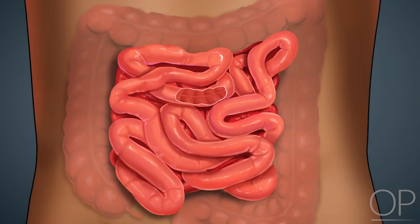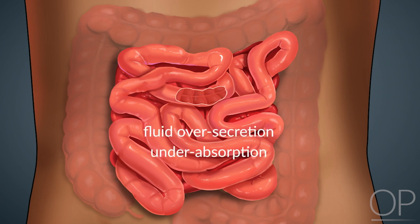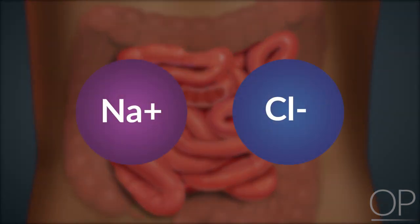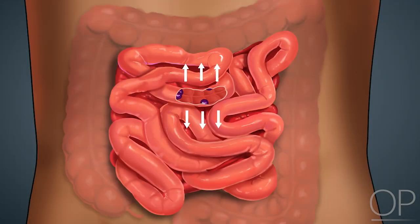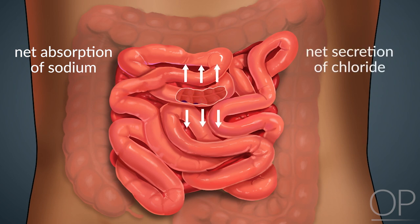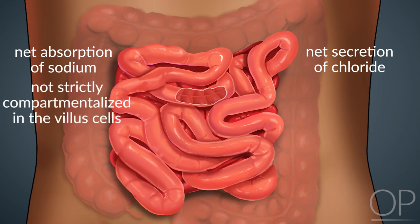Pathophysiology. Diarrhea occurs when excessive fluid remains within the lumen of the intestine. As such, diarrhea can be caused by fluid over-secretion, under-absorption, or rapid transport that effectively bypasses this process. As water moves passively across the intestinal epithelium, its relative volume in the lumen is determined by osmotic gradients. The transport of sodium and chloride play the greatest role in this balance. The villus epithelial cells of the small intestine cause a net absorption of sodium, and the crypt epithelial cells cause a net secretion of chloride.